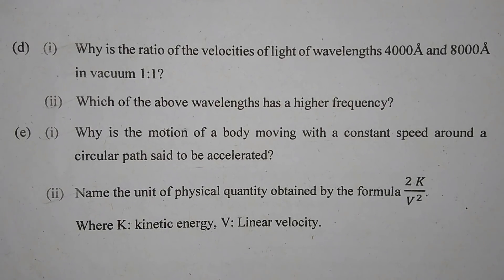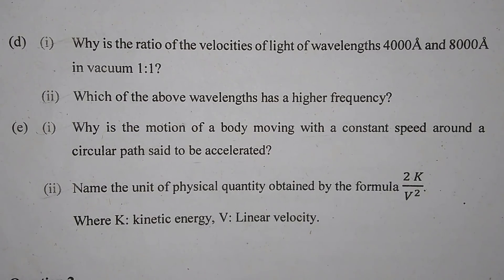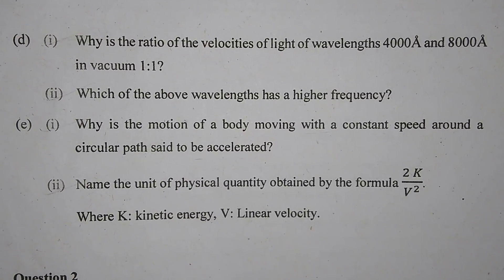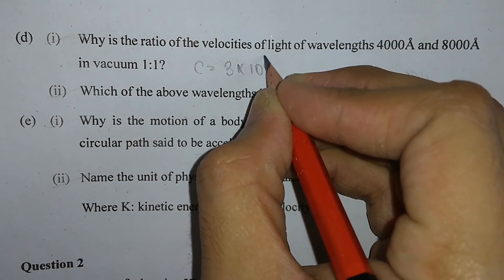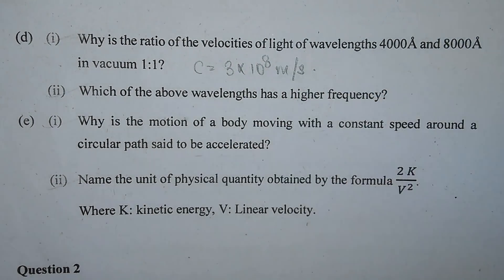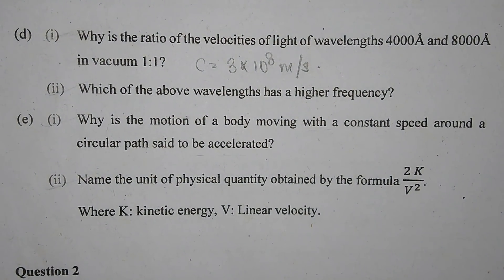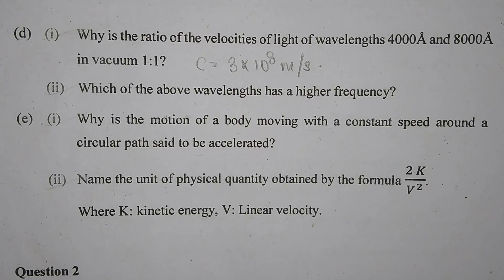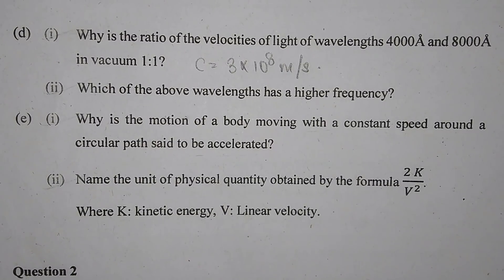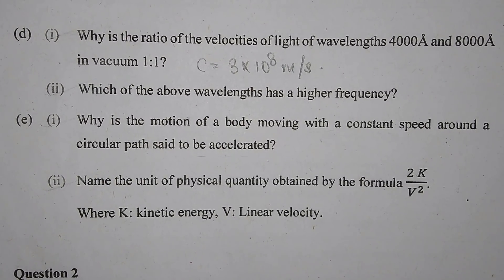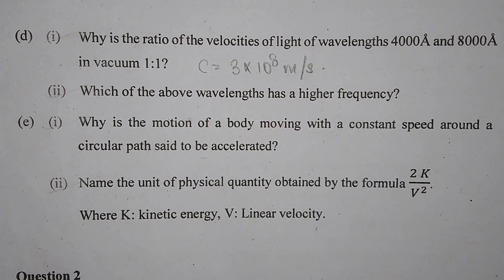Part D, number 1: Why is the ratio of the velocities of light of wavelength 4000 Angstrom and 8000 Angstrom in vacuum 1 is to 1? The speed of light in vacuum is 3 × 10⁸ metres per second. The speed does not depend on wavelength or frequency — it depends on the medium. So in the same medium, light of different wavelengths will travel at the same speed. That is why the ratio of velocities is 1 is to 1.